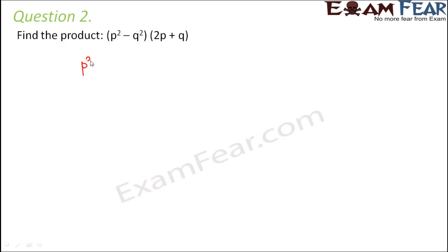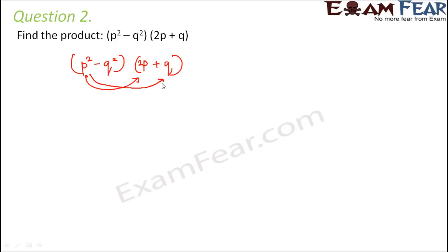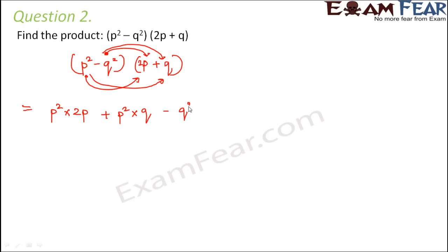So again, we just follow the same logic. It doesn't matter what the problem is — you just keep following the same logic. The first term gets multiplied to both terms of the next expression, and the second term again gets multiplied to both terms of the next expression. So this becomes P squared into 2P plus P squared into Q minus Q squared into 2P minus Q squared into Q, which becomes 2P squared into Q.